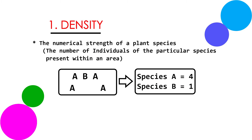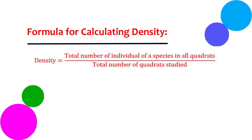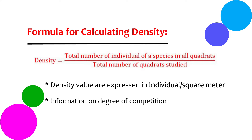What do we mean by plant density? Plant density is an expression of the numerical strength of a plant species. In other words, it simply refers to the number of individuals of a particular species present within the unit area studied. The formula for calculation of plant density is: Density equals the total number of individuals of the species in all quadrats studied divided by the total number of quadrats studied. The density values obtained are expressed in individuals per square meter, and this value gives us information about the degree of competition between the species in the habitat of interest.